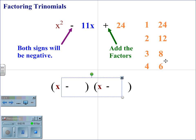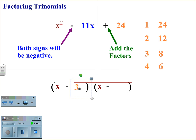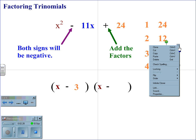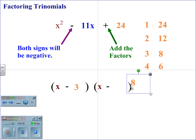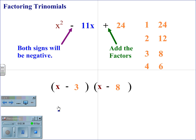Because we are adding, we are looking for the factors that will add up to the middle term, the b term, which in this case is 11. Therefore, the 3 and the 8 are the factors that add up to 11. Therefore, for the trinomial x squared minus 11x plus 24, the factors are x minus 3, x minus 8.